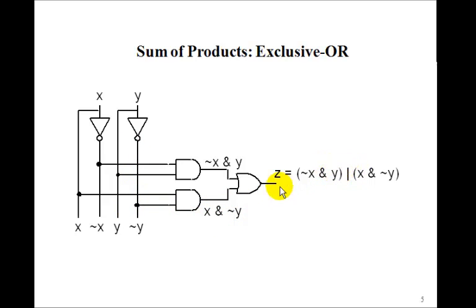And finally, to get z, we just OR them together with this OR gate. So we've now made a circuit whose output z will produce the exclusive-OR of x and y.